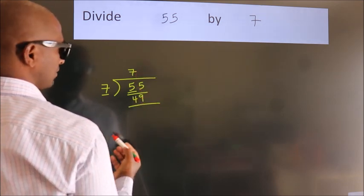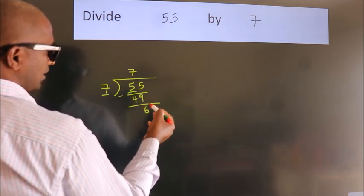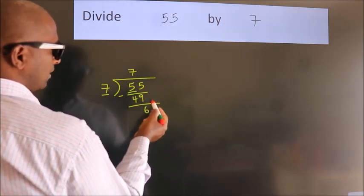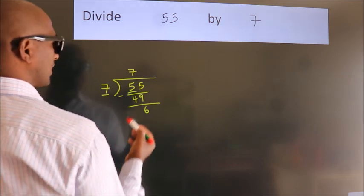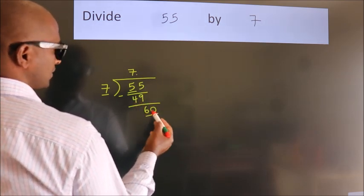Now, we should subtract. We get 6. After this, no more numbers to bring down. So what we do is put a dot and take 0. So, 60.